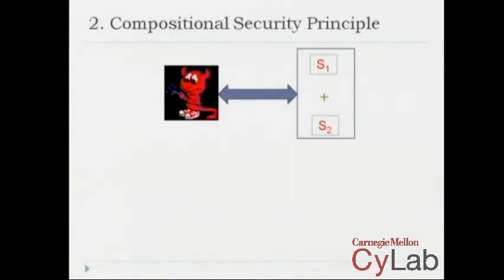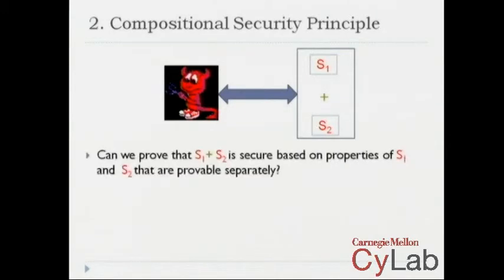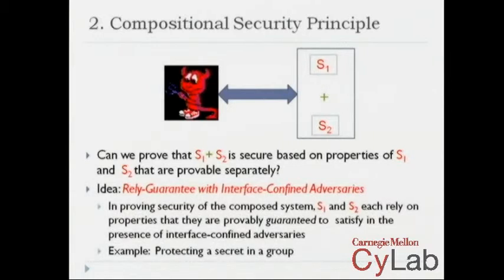The second idea is the compositional security principle itself. The goal is to prove that S1 composed with S2 is secure based on properties of S1 and S2 that are provable separately. The idea is what we call rely-guarantee in the presence of interface-confined adversaries. At a high level, each component will rely on properties that the other is provably guaranteed to satisfy — both S1 and S2 make assumptions about how the other will act, and we can separately show that each will respect each other's assumptions and guarantees.